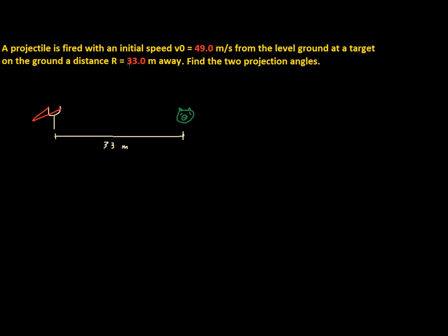Just to clarify, the numbers in red will be different for you, so be mindful of that while you watch and be sure to use the right numbers. Let's assume that the launch angle and the pig are on the same level plane, so from here to here would be zero degrees.